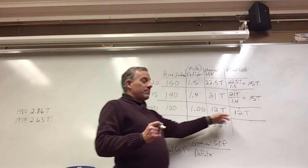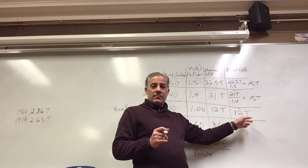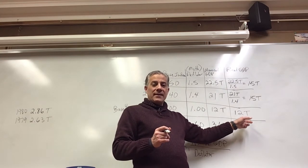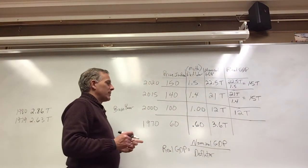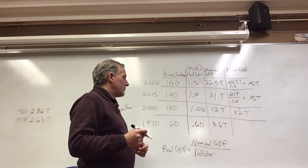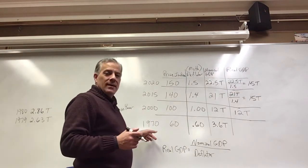As we said, real and nominal GDP are the same for the base year, so 12 trillion divided by 1 is 12 trillion. Let's go into the past.